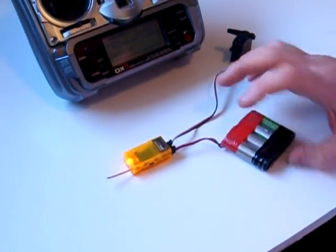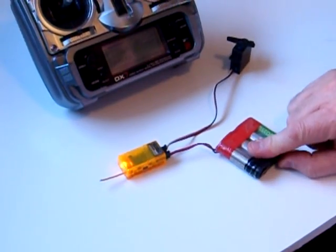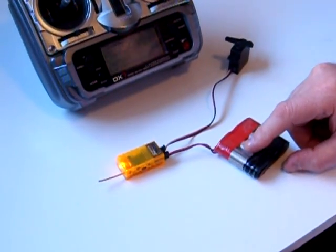Normally what happens is as you load up the receiver with a lot of servo action, the battery voltage on a poor battery can be depressed low enough to actually cause this brown-out scenario.